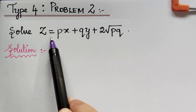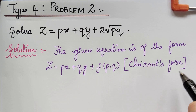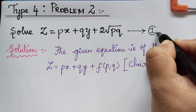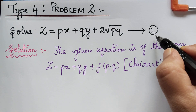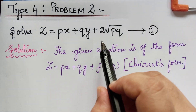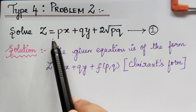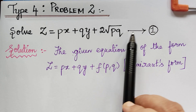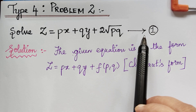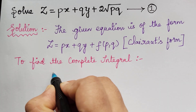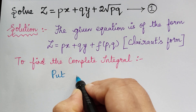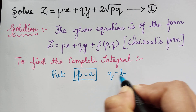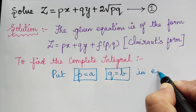We observe that the given equation is in the Clairaut's form. Let us mark the given equation as equation 1. The first step is to find the complete integral, for which we put p = a and q = b in equation 1.